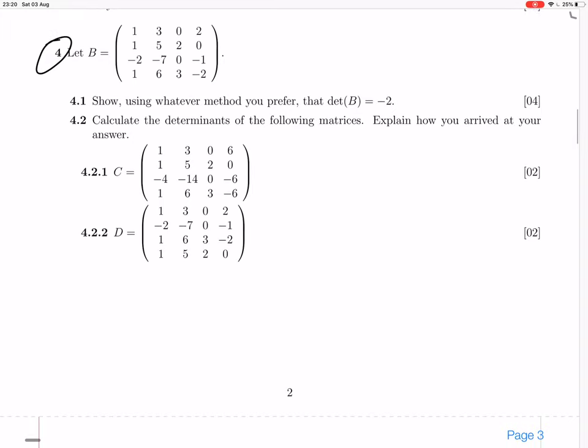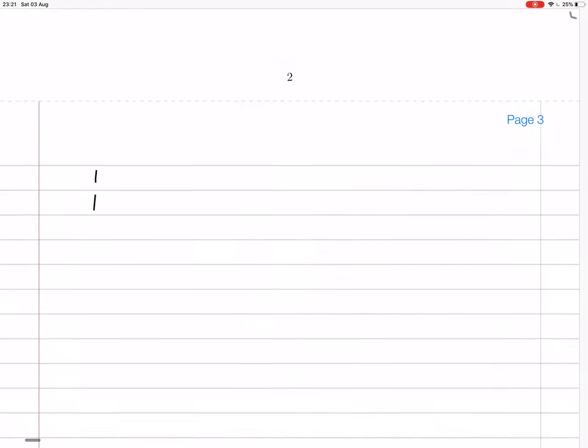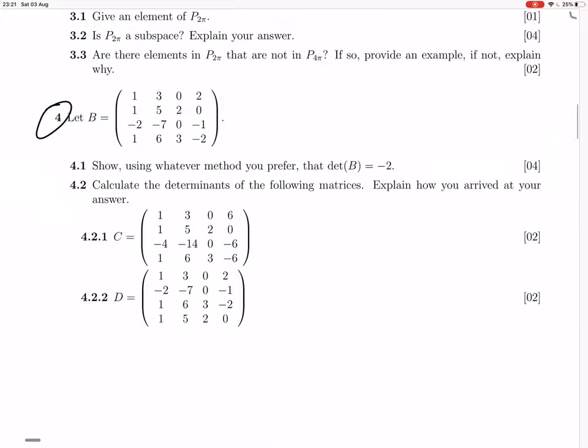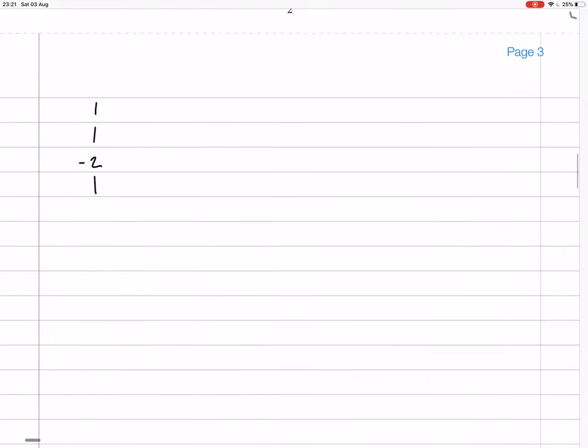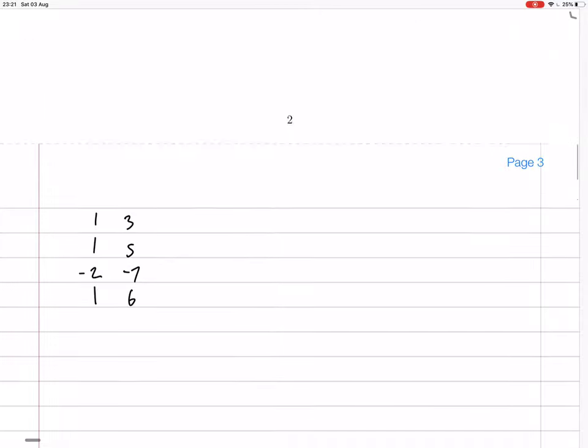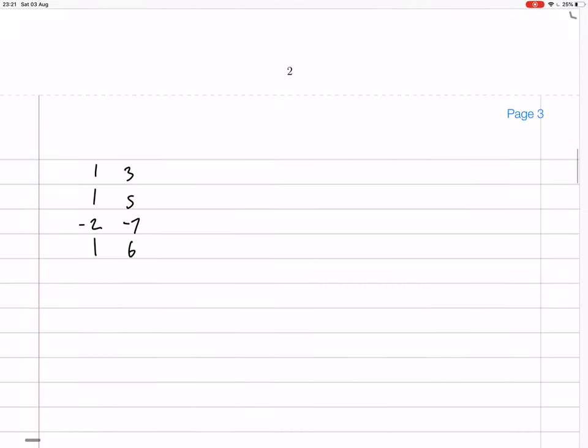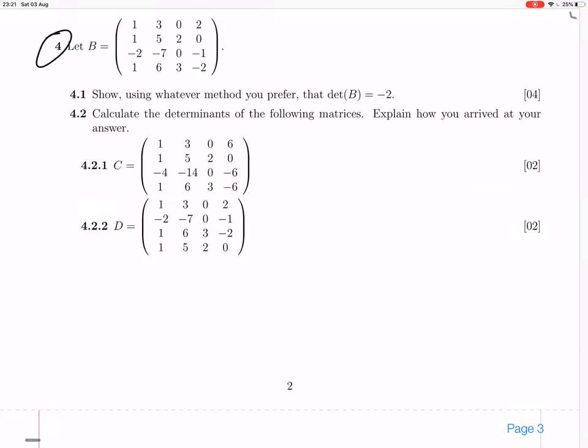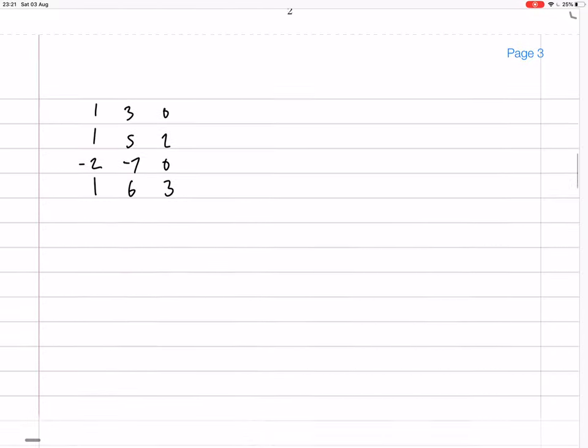So the first column is 1, 1, minus 2, 1. Next column, 3, 5, minus 7, 6. Then 0, 2, 0, 3. And 2, 0, minus 1, minus 2.